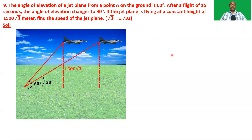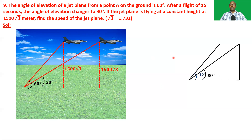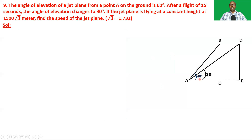The height is constant at 1500√3 meters. Now draw the lines for this picture. The angle of elevation of the plane is 60 degrees, and after 15 seconds the angle of elevation is 30 degrees. A is the point of observation. BC and DE are vertical lines of length 1500√3 meters. At C and E we have 90 degrees. BD is a horizontal line because the plane is flying at constant height.